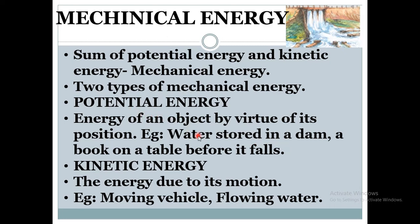Everything needs energy to stay in one position or to do work. Water stored in a dam possesses energy called potential energy due to its position. A book on a table, before it falls, possesses energy called potential energy. Kinetic energy is the energy due to motion — when a body is in movement, the energy it possesses is called kinetic energy. The sum of potential energy and kinetic energy gives mechanical energy.